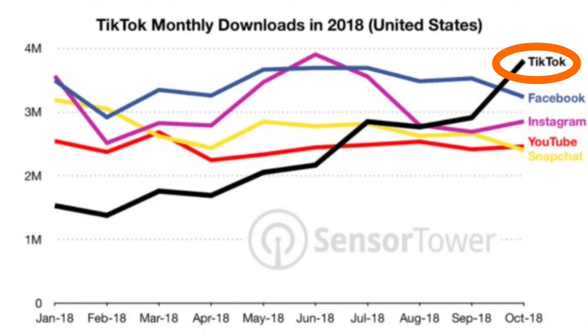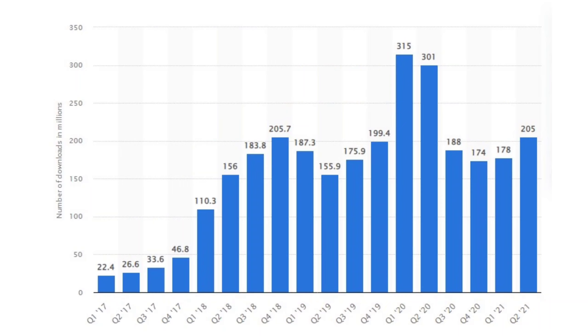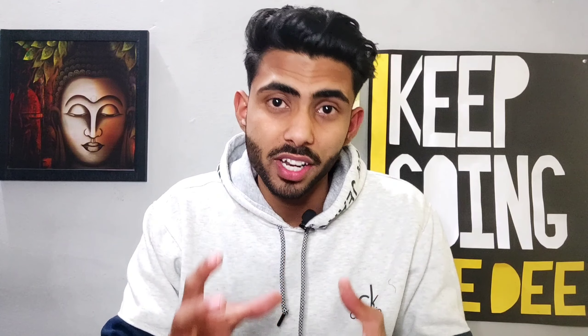Reason number one is TikTok has become the most popular social media platform in the world. In 2018 alone, TikTok surpassed Facebook, Instagram, YouTube, and Snapchat in monthly downloads. In 2018 the number was around 4 million downloads per month, which has increased more than 10 times by 2021. Currently TikTok has more than 1 billion monthly active users and has been downloaded over 200 million times in the US alone.